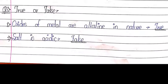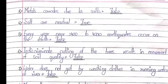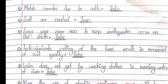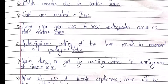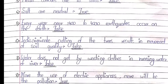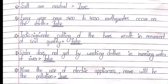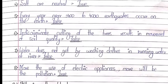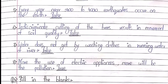Question number 3: True or false. First: oxides of metal are alkaline in nature — true. Second: salt is acidic — false. Third: metals corrode due to salt — false. Fourth: salts are neutral — true. Fifth: every year near 2400 to 4000 earthquakes occur on the earth — false. Sixth: indiscriminate cutting of trees results in movement of soil quality — false. Seventh: water does not get polluted by using clothes in running water of a river — false. Eighth: more the use of electric appliances, more will be the pollution — true.